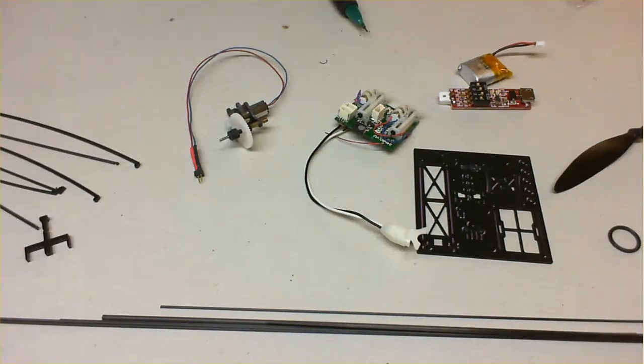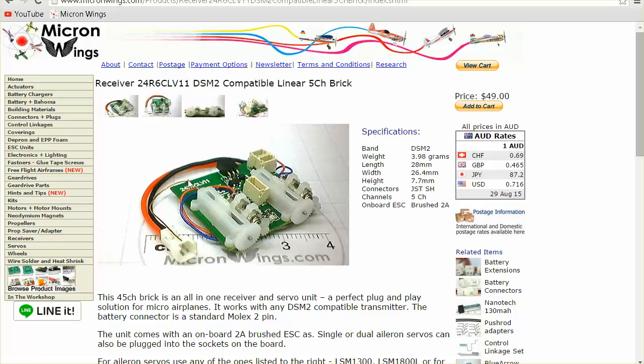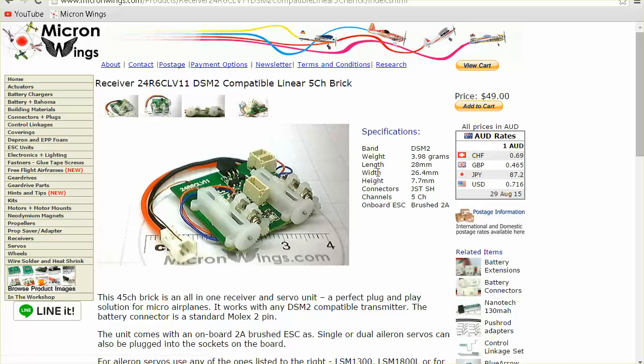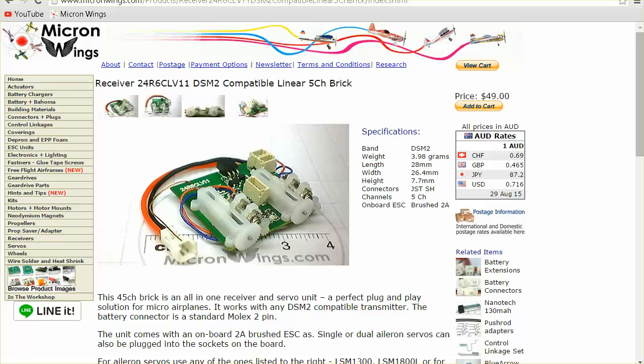Which is the exact type you need to go into the back of the receiver we supply. Now, the receiver we supply in the kit is this one here. Okay, it's on our website in the receivers section. It's this one here. The 24R6CLV11. So that's the receiver that we put in with the complete kit.